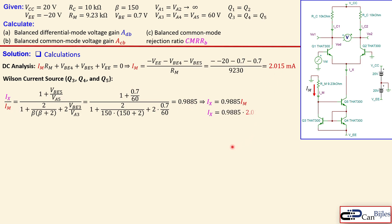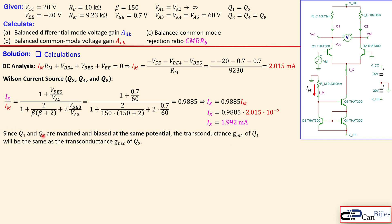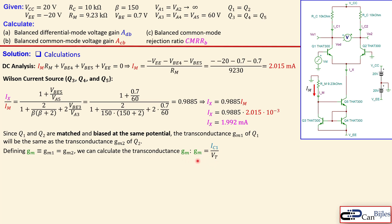Since Ix = 0.9885 × Im, and we have determined Im, we calculate Ix = 1.992 milliamps. Since Q1 and Q2 are matched and their bases are biased at the same potential, their transconductances gm1 and gm2 are equal. We define this as gm for the differential pair, which will determine the voltage gain. By symmetry, the emitter currents of Q1 and Q2 are each exactly 50% of the tail current.